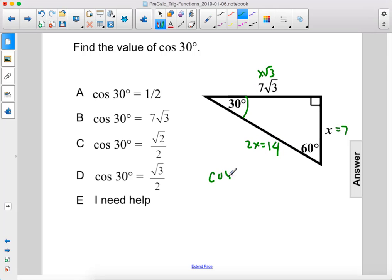So we have cosine 30 equals adjacent, which is 7 times the square root of 3, over 14. 7 divided by 14 is one half, so we have square root of 3 over 2. The answer is D.